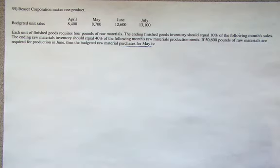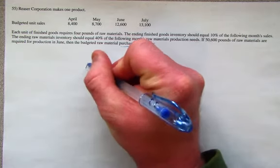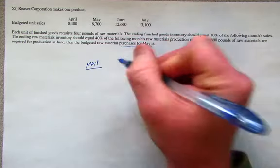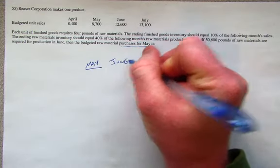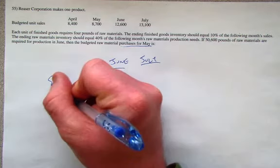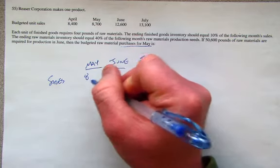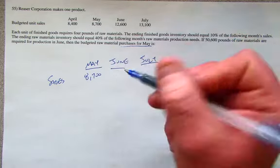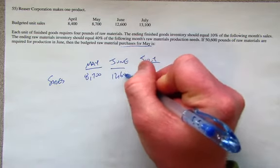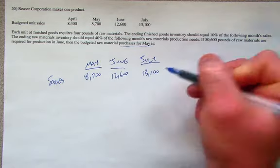We won't need all of this information, but let's just lay out here for May, June, and then July. Let's lay out what our sales budget is. So we expect to sell in the month of May 8,700 things, in the month of June 12,600, in the month of July 13,100.